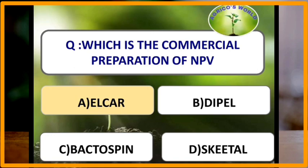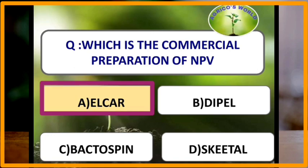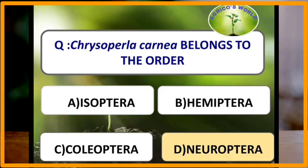The Destructive Insects and Pests Act was passed in the year 1914. The commercial preparation of nuclear polyhedrosis virus is Elcar. Chrysoperla carnea belongs to the order Neuroptera.